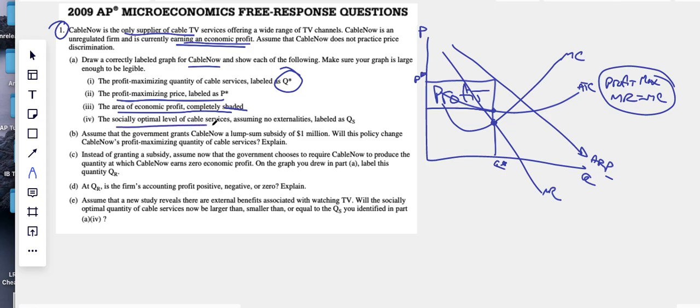The socially optimal level as QS. So we know our socially optimal level is where price equals marginal cost. You should know that as allocative efficiency. That is where a perfectly competitive firm would produce that quantity right there. Let's call it QS. I think we're good on all of these.